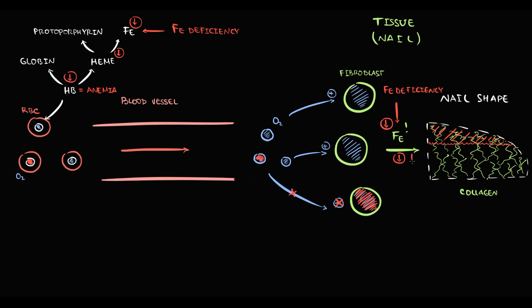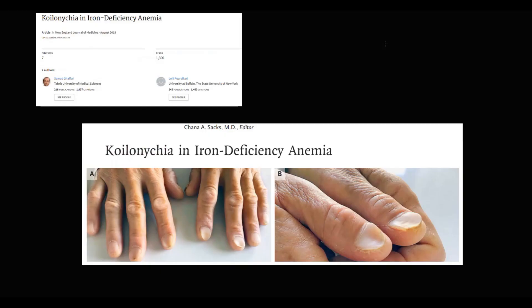With a decreasing amount of iron, collagen production will inevitably decrease. As a result, nails become thinner, and with time nail dystrophy develops — and exactly this condition we call koilonychia. On this image we can see koilonychia in iron deficiency anemia.